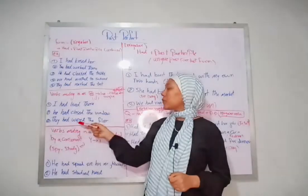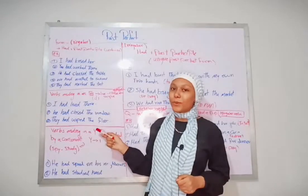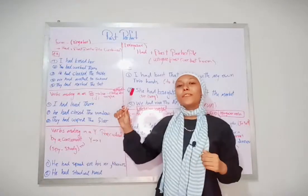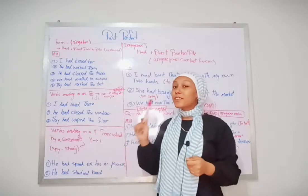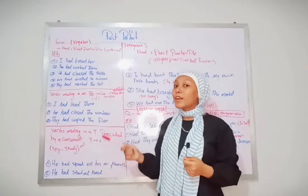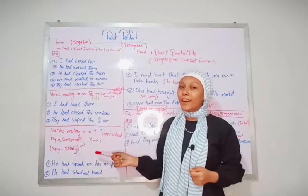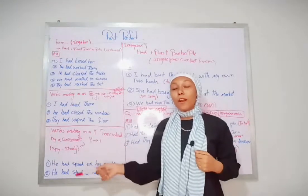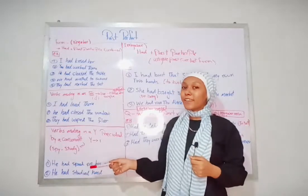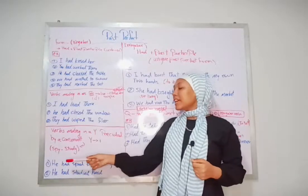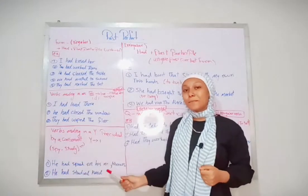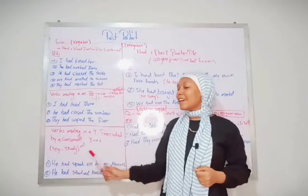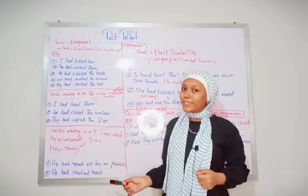They had wiped the floor. But for verbs ending in -y, especially those preceded by a consonant, the -y becomes -i: for example, 'spy' and 'study'. Examples: he spied on his neighbor; he had studied hard.